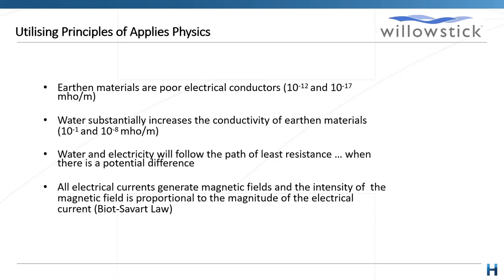There are a number of key principles that the Willow Stick technology is based upon. The first is that earthen materials are poor electrical conductors. Water substantially increases the conductivity of earthen materials. Both water and electricity will flow or follow the path of least resistance when there is a potential difference. And finally, all electrical currents generate magnetic fields, and the intensity of the magnetic field is proportional to the magnitude of the electrical current.